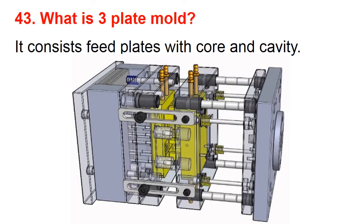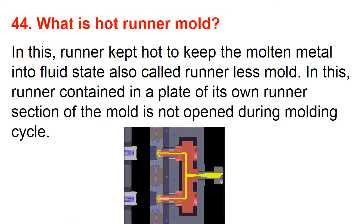Question number forty-three: What is the three plate mold? It consists of feed plates with core and cavity. Question number forty-four: What is the hot runner mold? In this, the runner is kept hot to keep the molten material in a fluid state, also called the runnerless mold. The runner is contained in a plate of its own runner section of the mold.